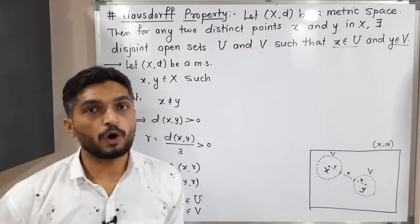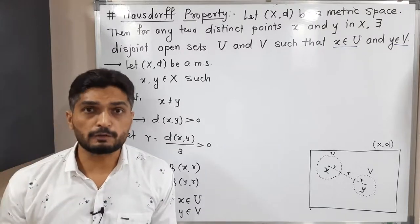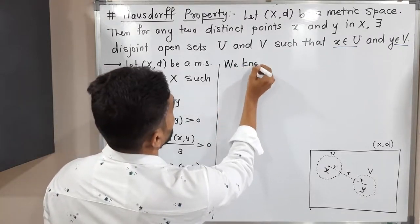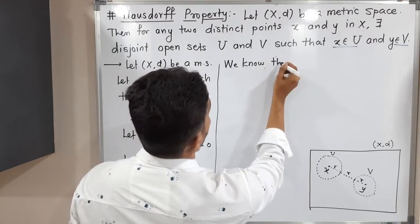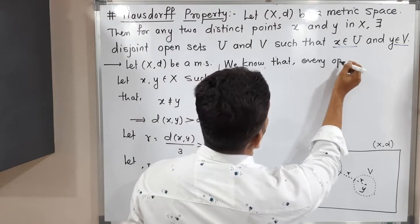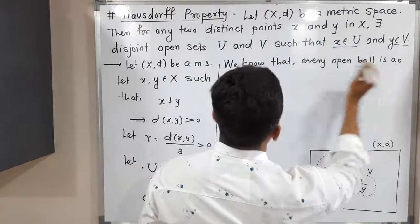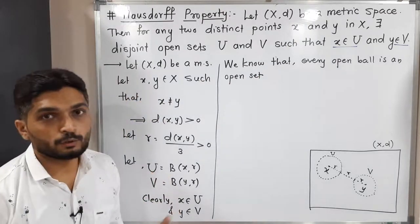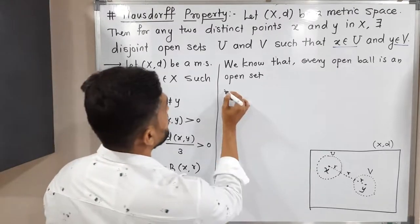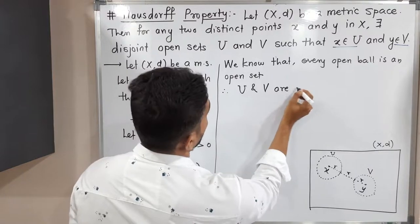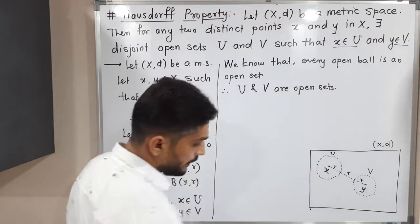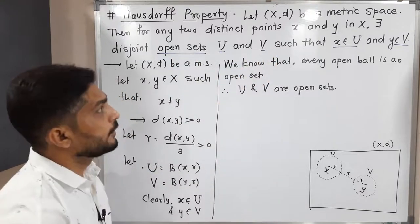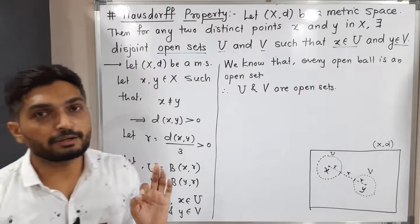We know that every open ball is an open set — we have already proved this in a previous result, so we can use it directly here. Since U is an open ball, it is an open set; since V is an open ball, V is also an open set. Therefore U and V are open sets.